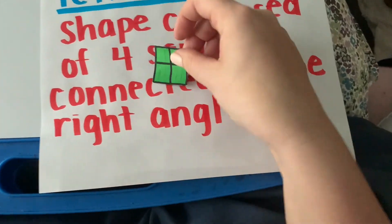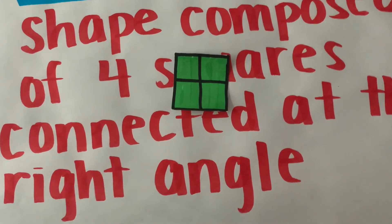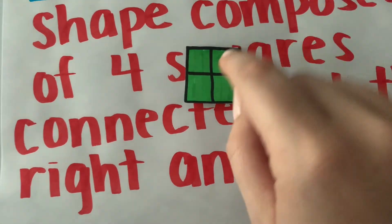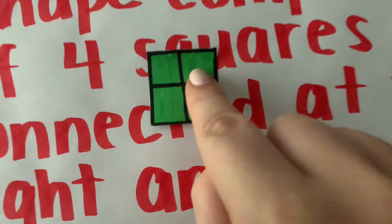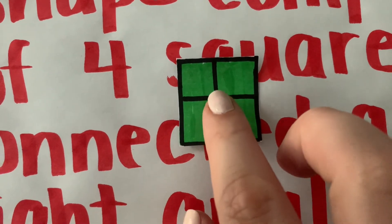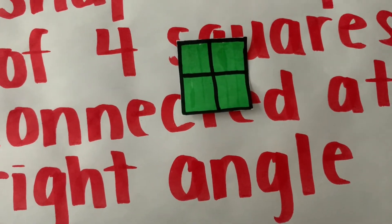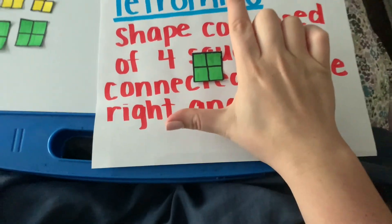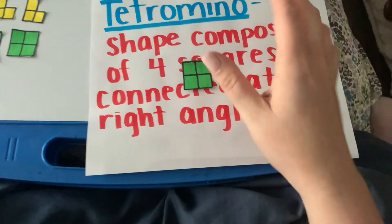So a tetromino is a shape composed of four squares connected at a right angle. For instance here is a tetromino. Go ahead and say that five times fast and you'll see that this square is connected to this square at a right angle. Here is our right angle. Remember our right angle is the one that looks like just a straight up L.